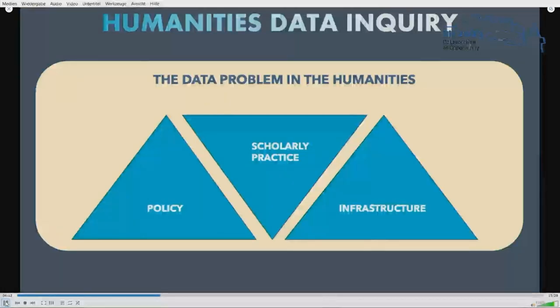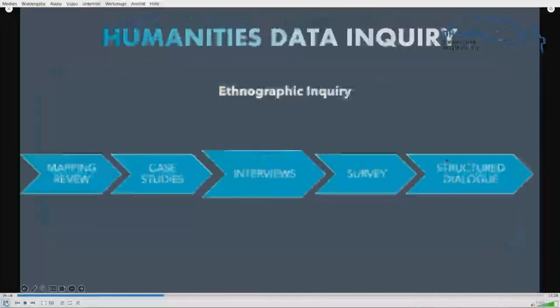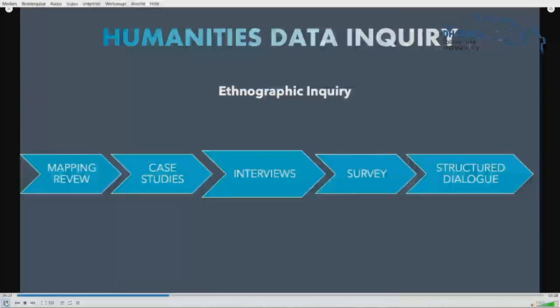That looks at the data problem in the humanities from multiple angles by synthesizing multiple sources of data to document and compare how humanities scholars, policymakers, and infrastructure designers conceive of data issues and differentially and collaboratively imagine, build, navigate, and manage humanities and cultural heritage research infrastructures.